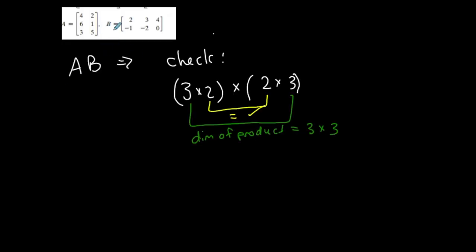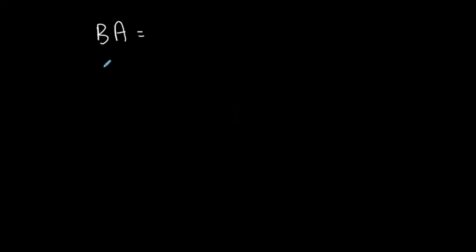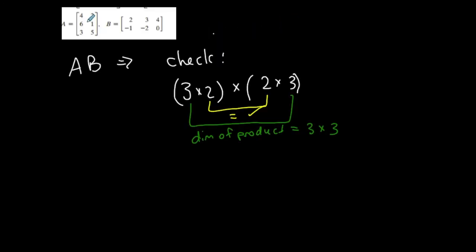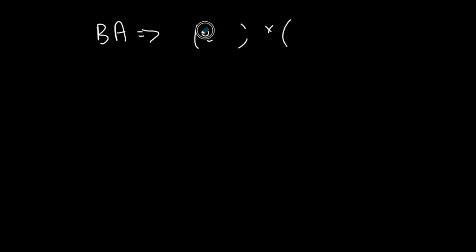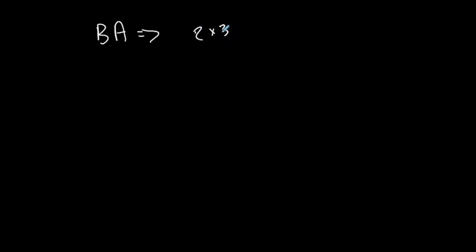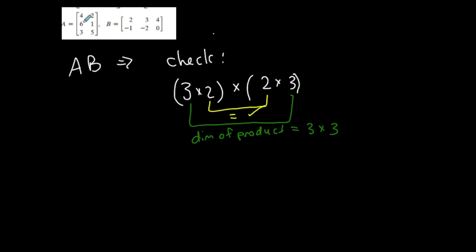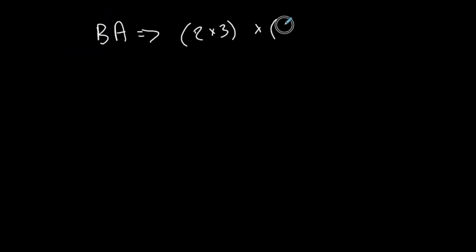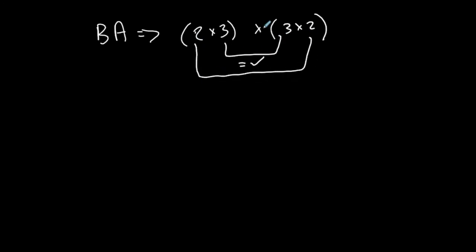Now let's assume I want to do B times A for these two matrices. Matrix B is a two by three matrix, and matrix A is a three by two matrix. Look at that — the two middle numbers are the same, so that works. And my final product will have the dimension of two by two. I'm not going to compute this one — you can check that yourself.